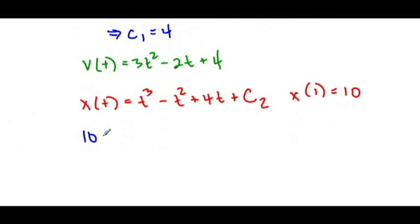So here we have 10 = 1 - 1 + 4 + c₂. And 10 - 4 is 6, and this, of course, yields that our second constant, c, is equal to 6.